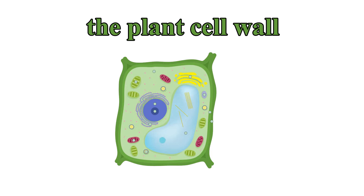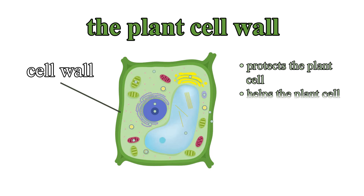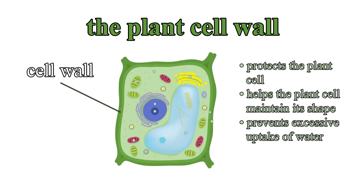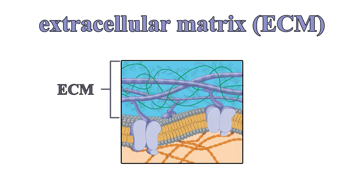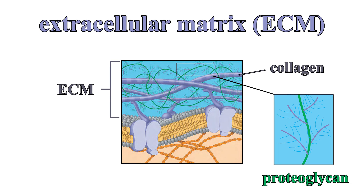Let's talk about external cellular structures. In plant cells, a thick wall made up of cellulose surrounds the plasma membrane, protecting the cell, helping it maintain its shape, and preventing excessive uptake of water. Although animal cells don't have these walls, they do possess an elaborate extracellular matrix, or ECM for short. The most abundant ingredient in animal ECMs is collagen, which forms a web of strong fibers outside the cell. These fibers are embedded in a network of proteoglycan molecules, or proteins that are heavily saturated with carbohydrate chains. The ECM is bound to the plasma membrane at membrane proteins called integrins.